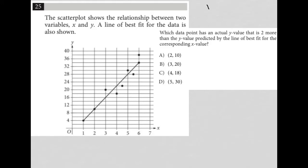This question is a diagram question. More specifically, it's a graph question. We see the graph provided here. The question says the scatter plot shows the relationship between two variables, x and y. X axis, y axis. A line of best fit for the data is also shown.